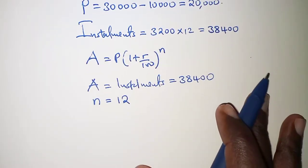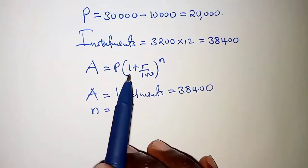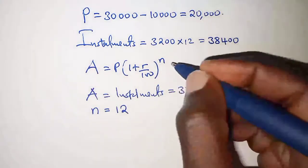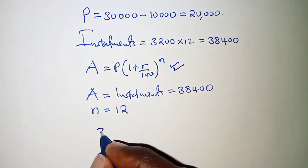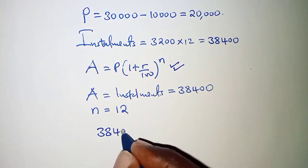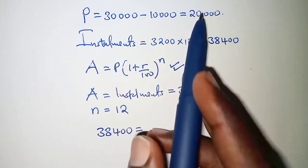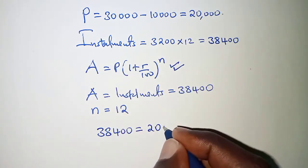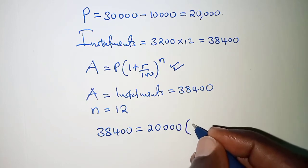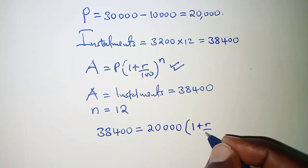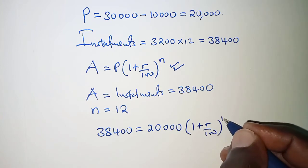So we can now do our substitution in the compound interest formula. So the amount we already have is 38,400, and we equate that to the principal which is 20,000 by 1 plus r over 100 raised to power 12.